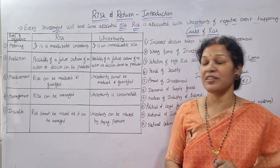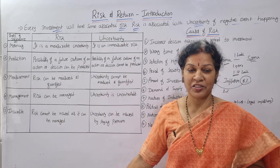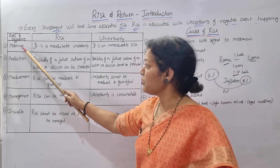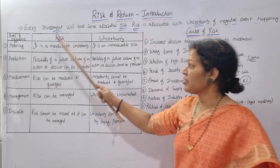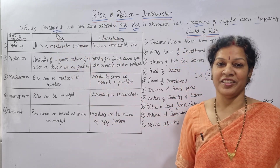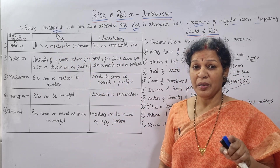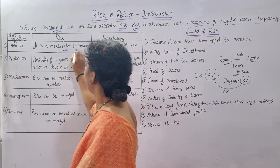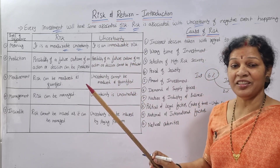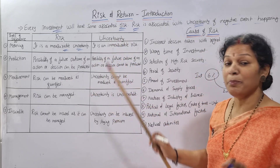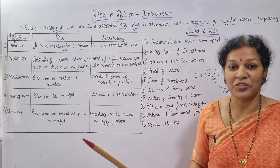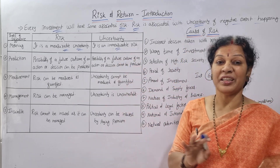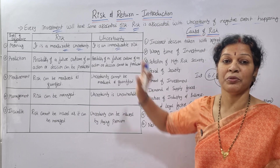Let's understand the differences between risk and uncertainty through a table with five points. First: Meaning. Risk is a measurable uncertainty — risk can be measured. Uncertainty, however, is an immeasurable risk — we cannot measure it. With risk you have some idea; with uncertainty you have no idea at all.